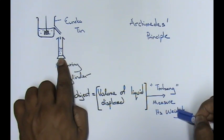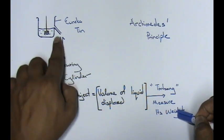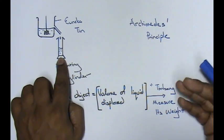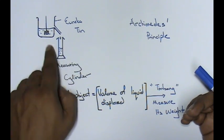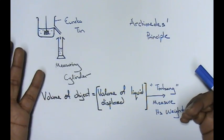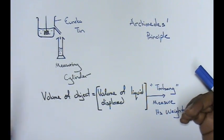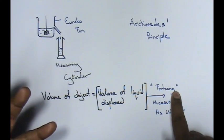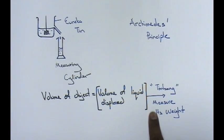Before the liquid displaced comes in, measure the mass of your measuring cylinder without any water inside. Then the moment the water goes in, you just subtract. That is very simple. But the concept is, volume of liquid displaced, you measure its weight.